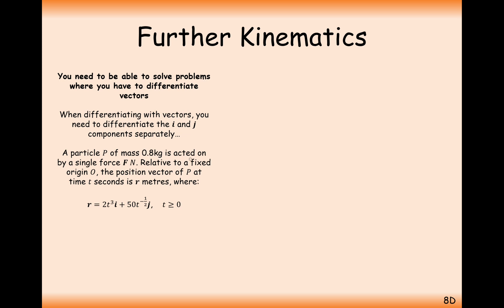We have a particle of mass 0.8 kilograms acted on by a single force F. Relative to a fixed origin O, the position vector of P at time t seconds is R meters. So this here is a displacement vector. It's S equals 2t cubed i plus 50t to the power of minus half j. So we can see here we've got an I component to our displacement and a J component to our displacement.